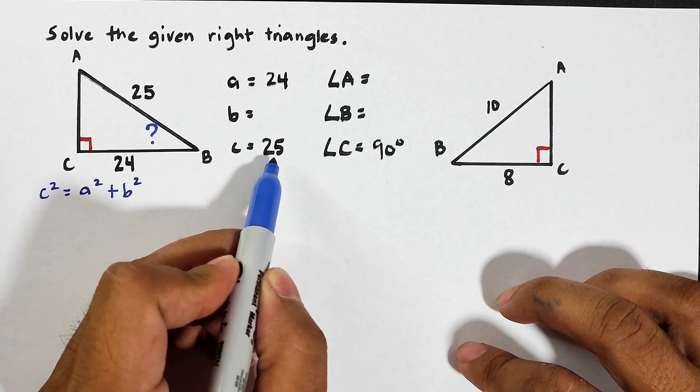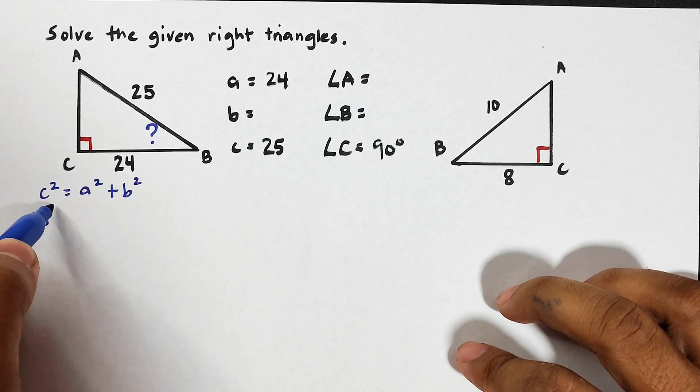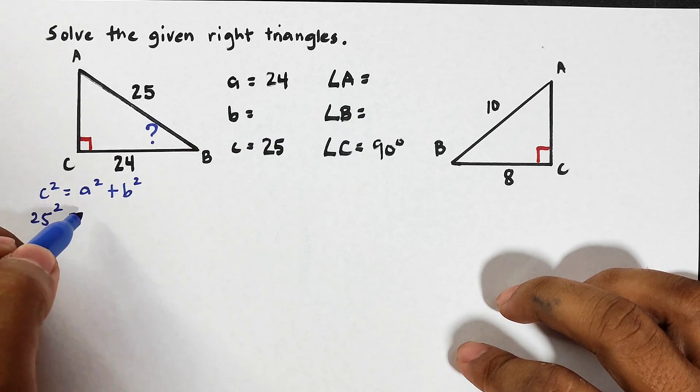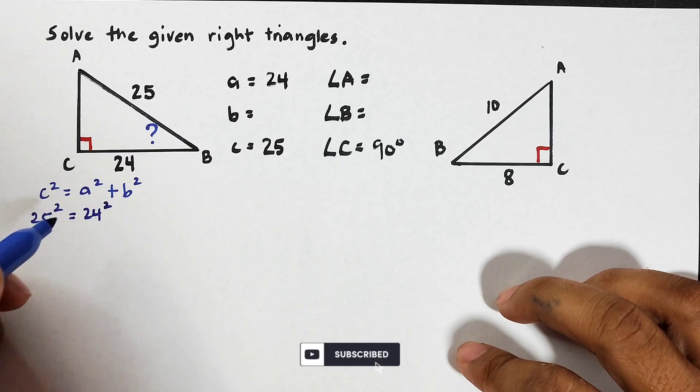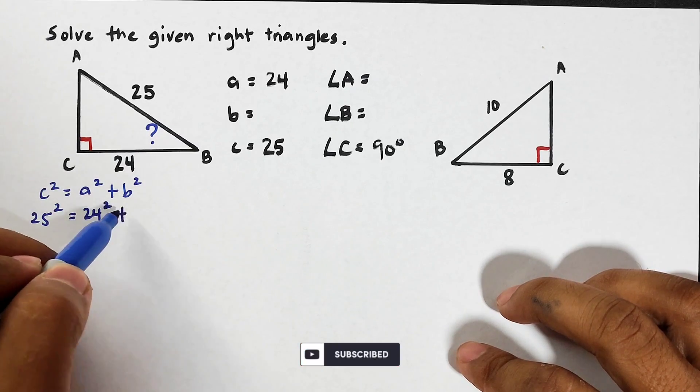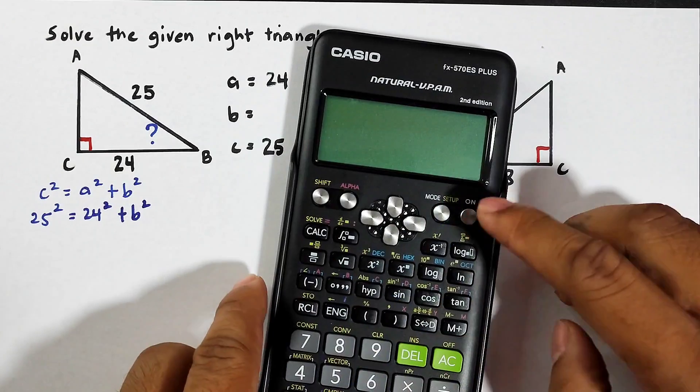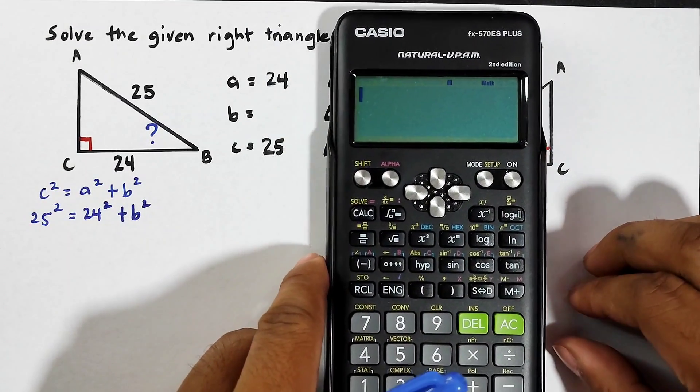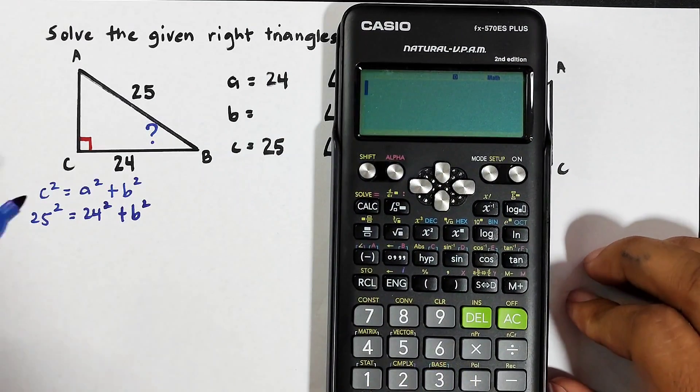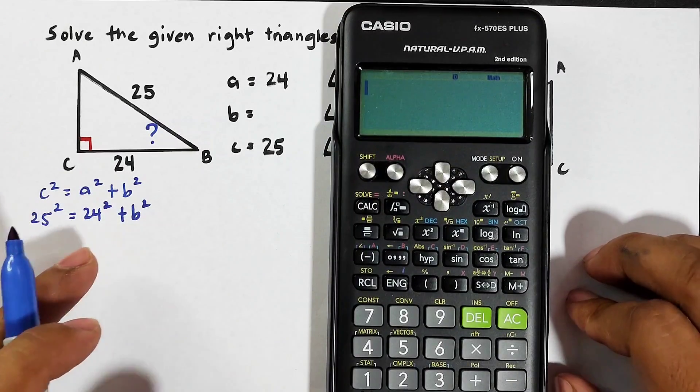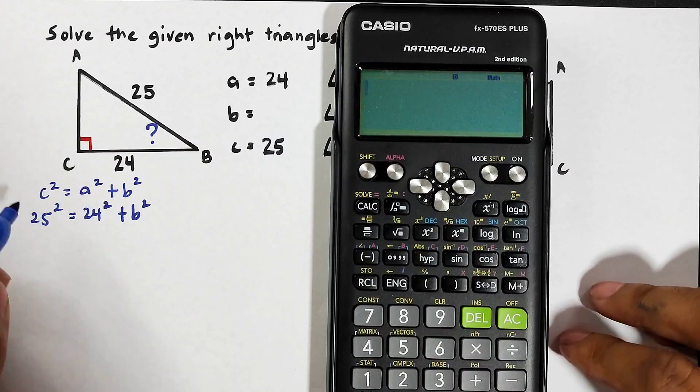Right now we have the value of c which is 25, so that would be 25 squared is equal to your a squared which is 24 squared plus your b squared. To make your solution quick you can use your scientific calculator. For this you can manipulate the equation first. You can simplify 25 squared and 24 squared, but in my case I'll be doing this one.